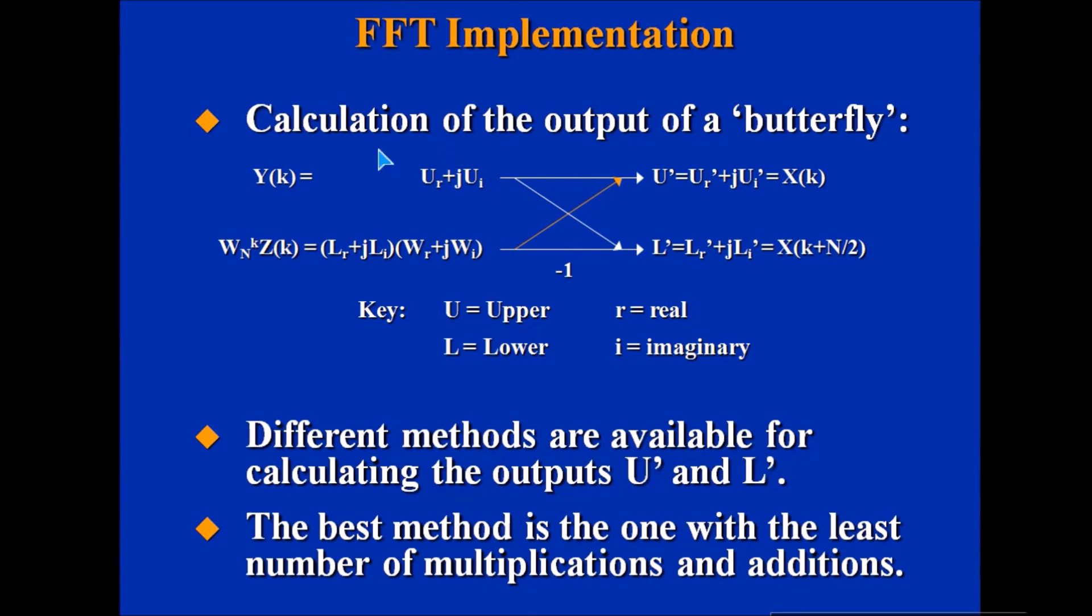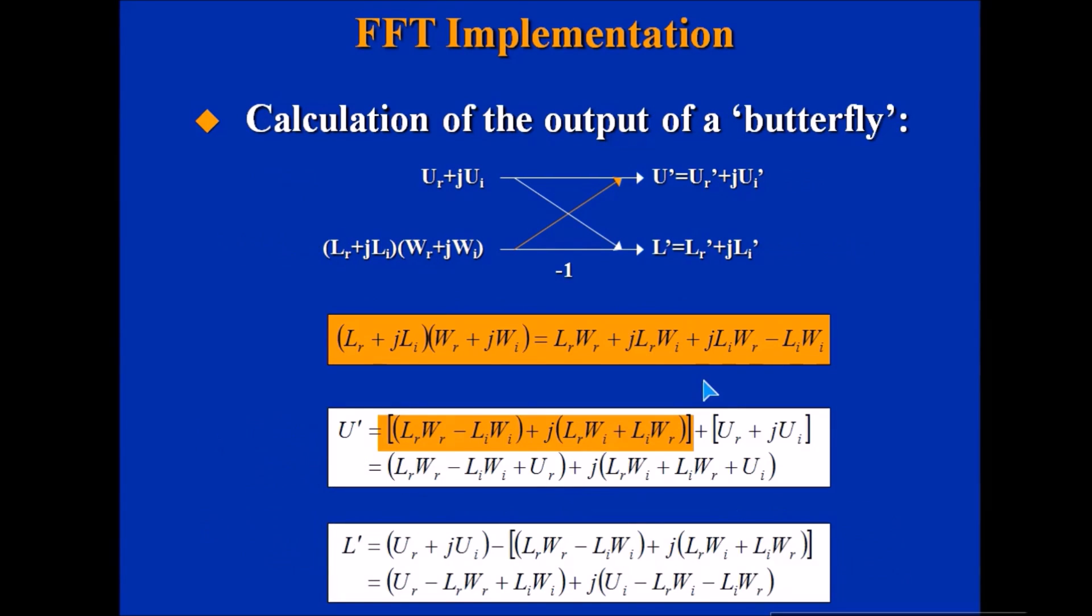Now we have Y(k) and Z(k). Collecting all periodicity and symmetry and dividing, we finally get u and l. There are different methods to compute u and l. The best method is the one with the least number of multiplications and additions. We calculate u by this manner and l by this manner.